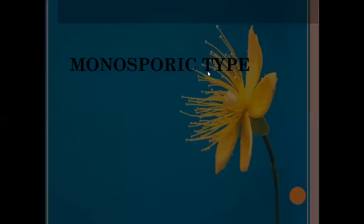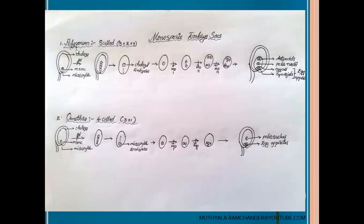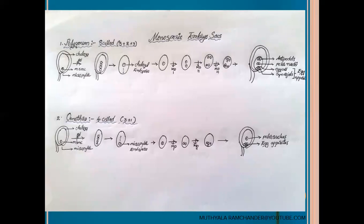Monosporic type of embryosacs are mainly two types: one is the polygonum embryosac and the second one is the enothera embryosac. In angiosperms, more than 70% of plants contain polygonum embryosacs. At the mature stage, the polygonum embryosac contains eight cells arranged in a three plus two plus three arrangement, also called the polygonum arrangement.